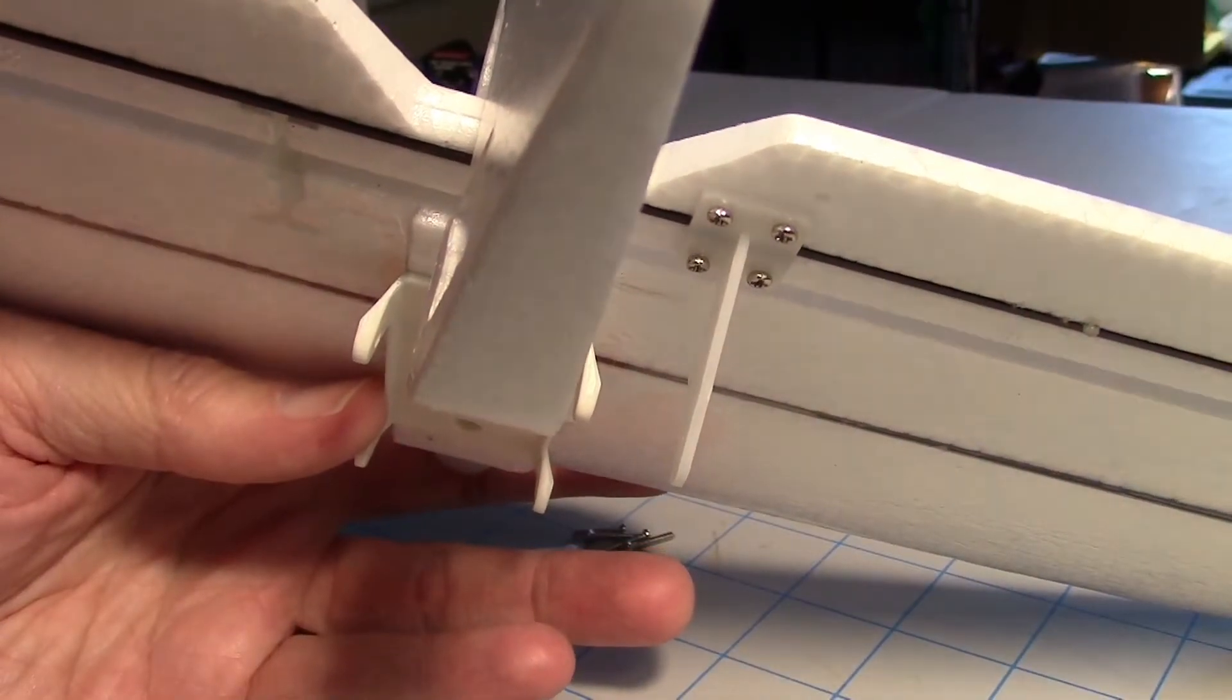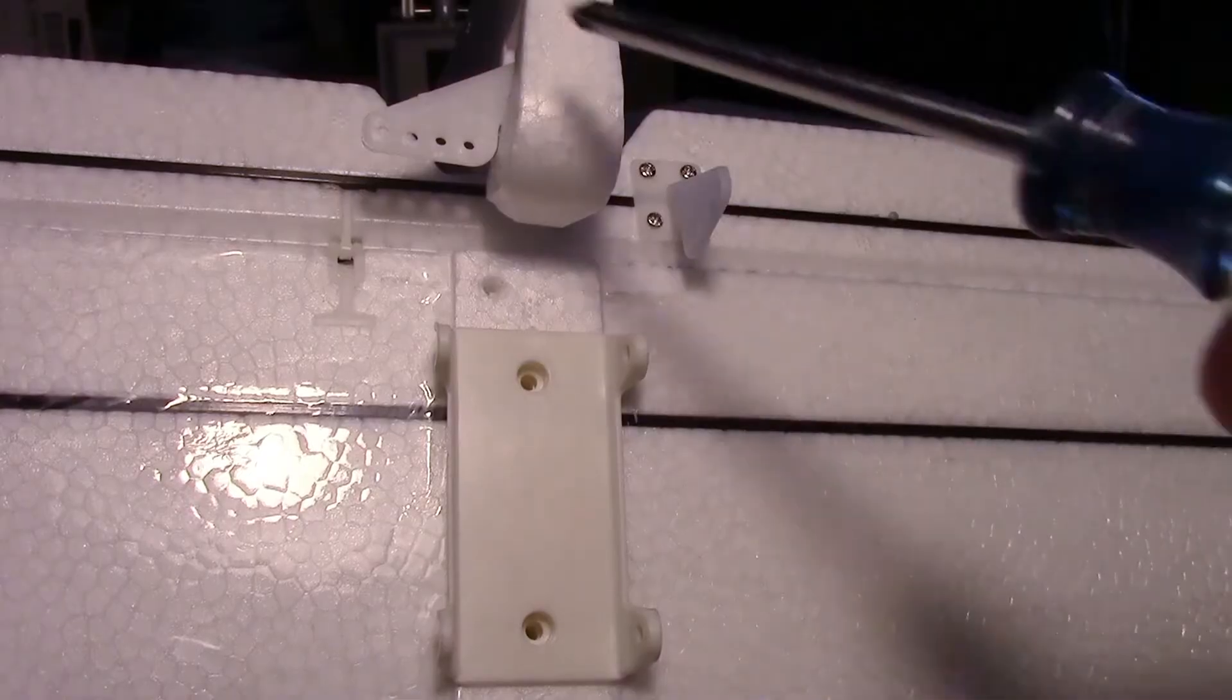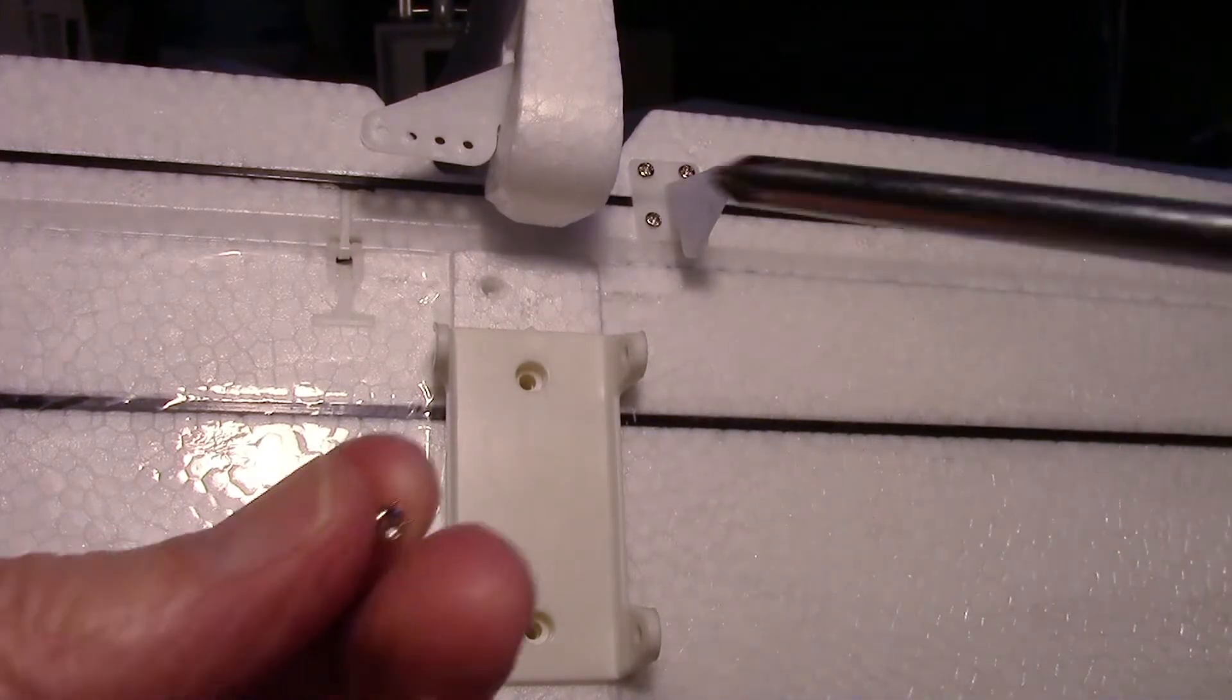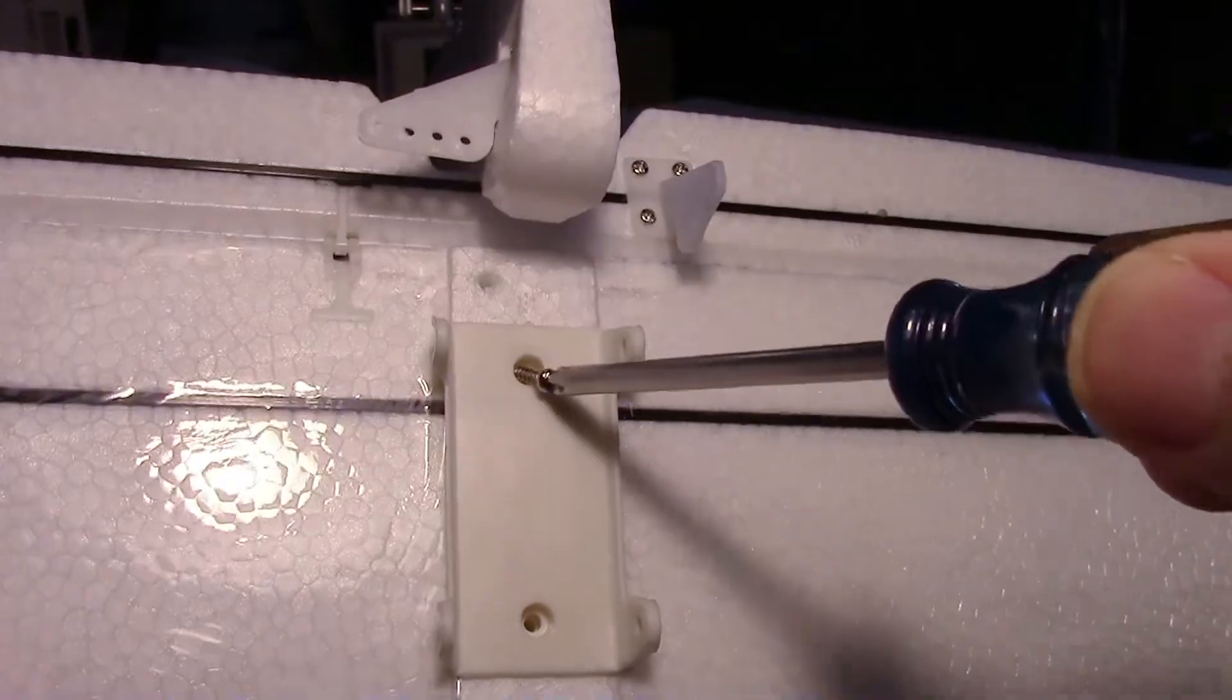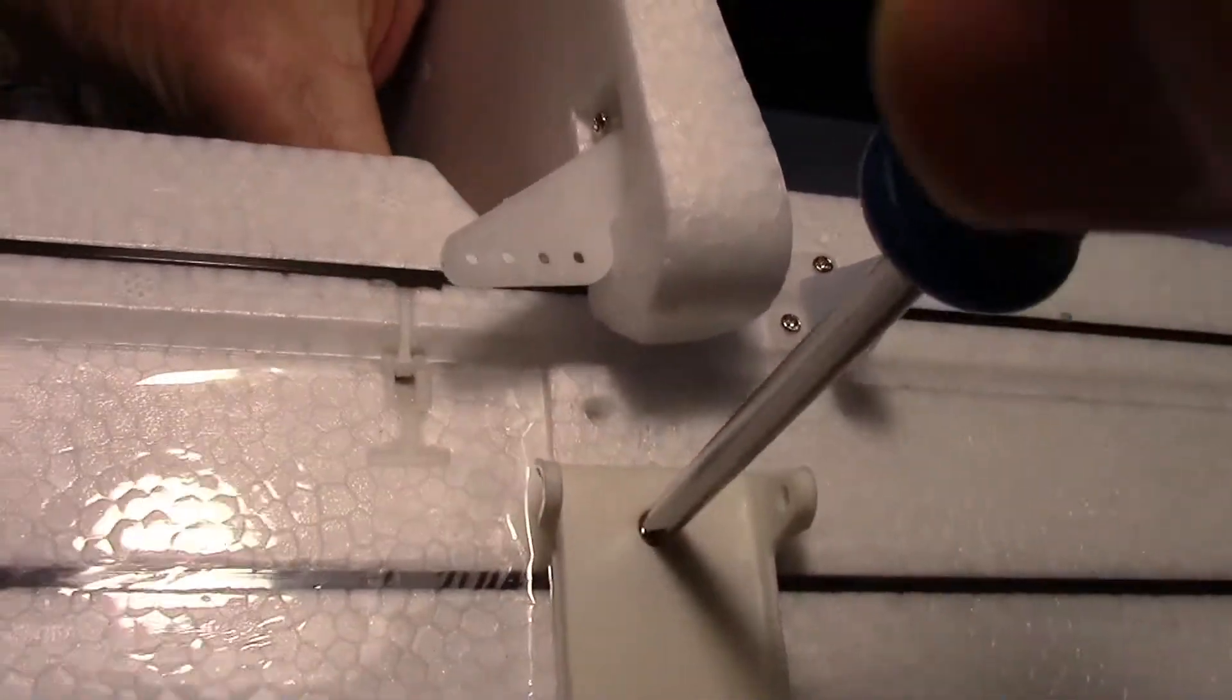Now it's time to bolt the two sections together with the screws that came in the kit. Just two screws will hold the tail section together, then there's four more to hold it on to the fuselage.